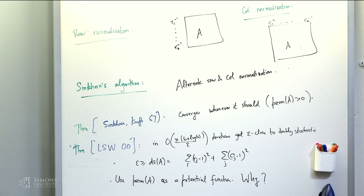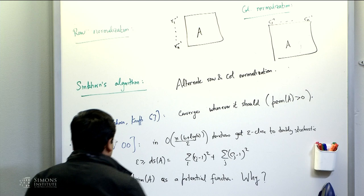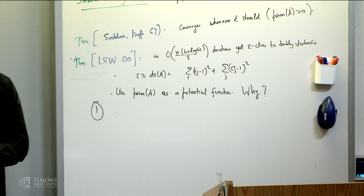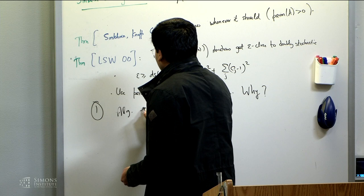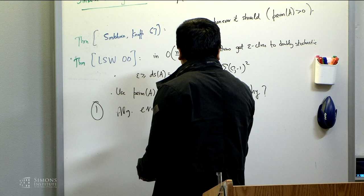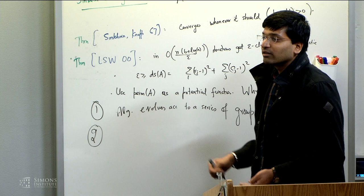They use the permanent as a potential function for their analysis. There are two reasons for this. One is that the algorithm evolves according to a series of group actions — you're multiplying by a diagonal matrix on the left and right. The other reason is that the permanent is invariant with respect to this group action — invariant in quotes because it's actually invariant only up to a scalar.